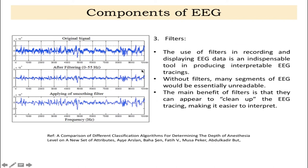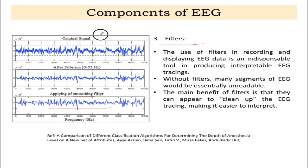The next important component of EEG is the filters. These filters attenuate noise from the original signal — for example, filtering in the 0 to 55 Hz range produces a cleaner signal, and applying smoothing filters improves it further. Without filters, the raw EEG data would be almost unreadable. So the first step after acquisition is to clean the raw data by applying filters.